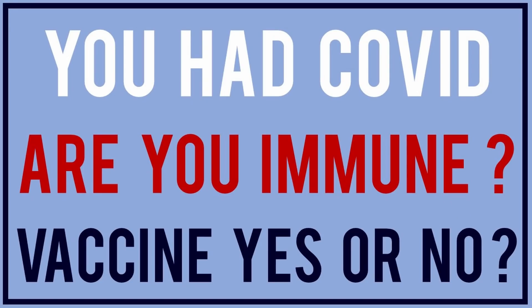The immune response also produces long-lived memory B and memory T cells that will subsequently recognize the virus. We know based on patients who have had COVID-19 that immunity lasts at least six to eight months in a high portion of people. It may be much longer — we just don't have the research that goes out further. Interestingly, research has shown that patients infected with the original coronavirus that caused SARS back in 2003 have measurable T cell responses to the virus even 18 years later.